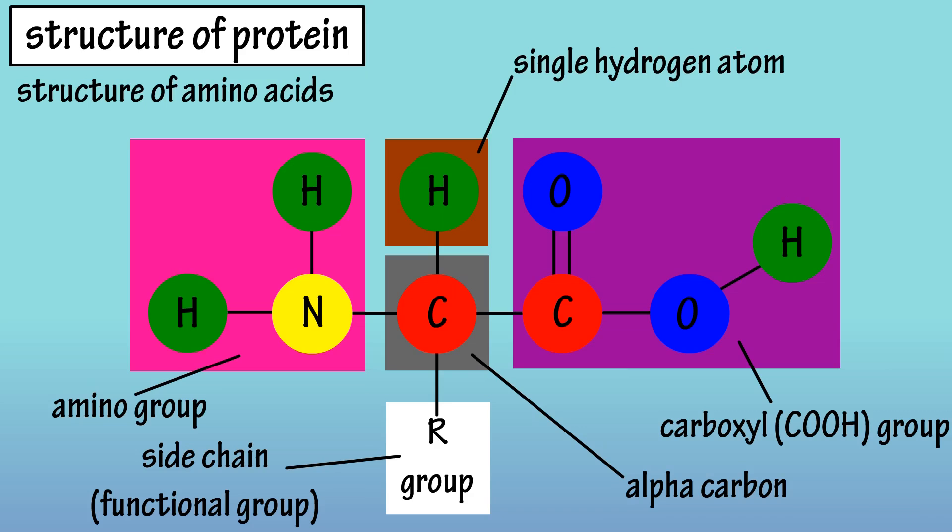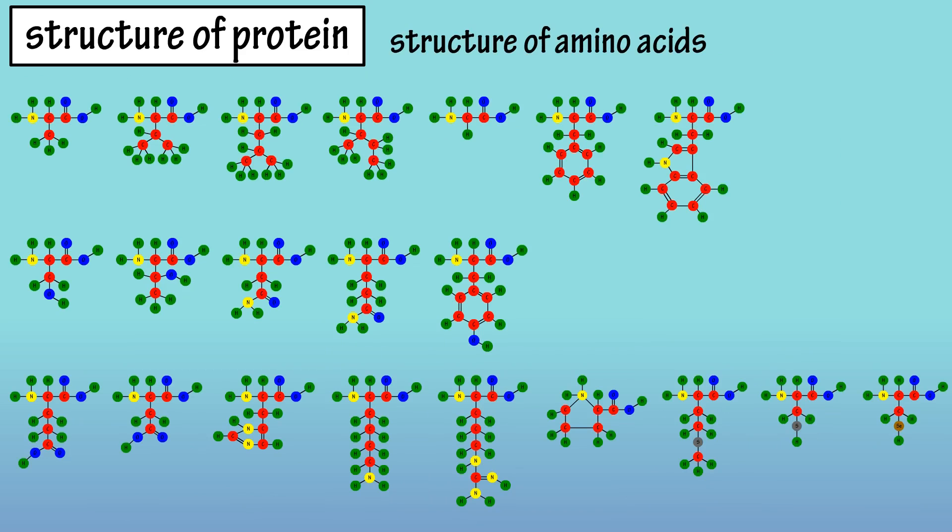The formation of the side chain is what makes amino acids different from one another. On the screen is the structural formulas for all 20 of the standard amino acids, along with the amino acid selenocysteine, as some sources list it as the 21st standard amino acid.